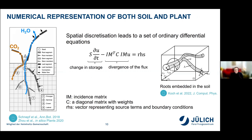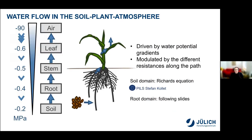In the case of roots, we have the special case that the roots are embedded in a soil domain. We have to solve this now for both domains and decide how to compute the exchange between these two spatial domains. Our fundamental knowledge about this system is that water flow is driven by water potential gradients and modulated by the different resistances along the path. In the soil, this is usually described by the Richards equation, which has been explained in an interdisciplinary lecture by Stefan Kollet.